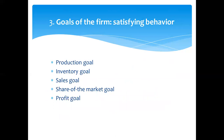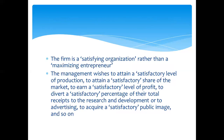What are the goals of the firm? The goal of the firm is satisficing behaviour — the firm does not want to maximize anything; it wants just to satisfy. It wants to satisfy the following five important goals: production goal, inventory goal, sales goal, share of the market goal, and profit goal. The firm is a satisficing organization rather than a maximizing entrepreneur.